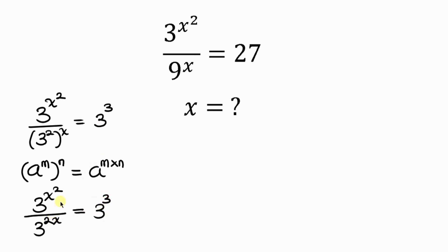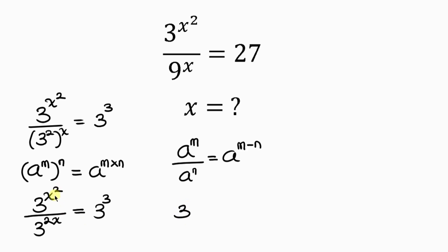Now let's also apply the law of indices here, that says when I have a to the m divided by a to the n, this is equal to a to the m minus n. Division is associated with subtraction. So the bases are the same — we take 3 and subtract the powers: x squared minus 2x, and this is equal to the right-hand side, 3 to the 3.